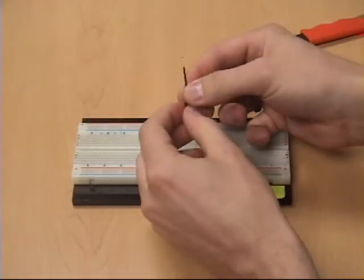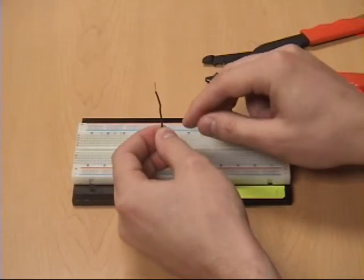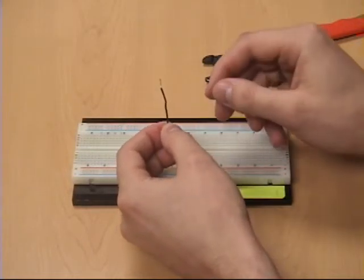You also want to make sure that if you're reusing wires, the tip of the wire here is nice and straight. If it's bent, it can sometimes catch on the contacts inside and that will make it difficult to pull out.